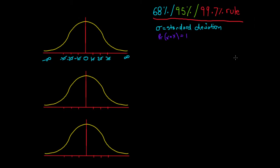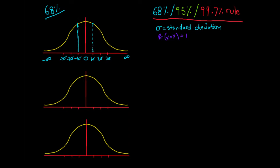These rules — the 68%, 95%, and 99.7% rule — really just examine these properties of standard deviation and this curve. The 68% rule says that between negative one and positive one standard deviations, if we draw boundaries at one standard deviation and negative one standard deviation and section off that area, the area under the curve between them contains 68% of our observations.